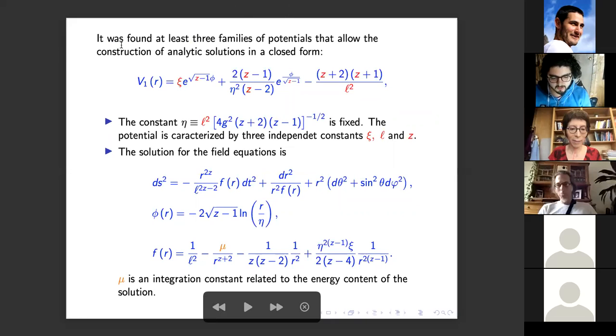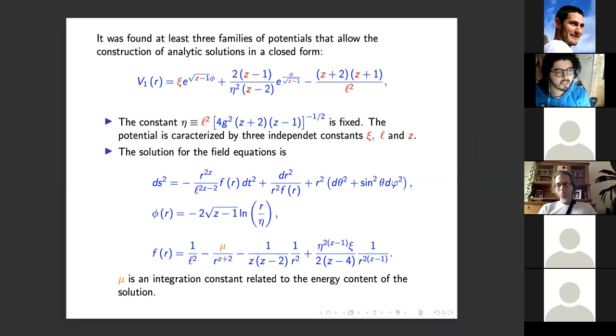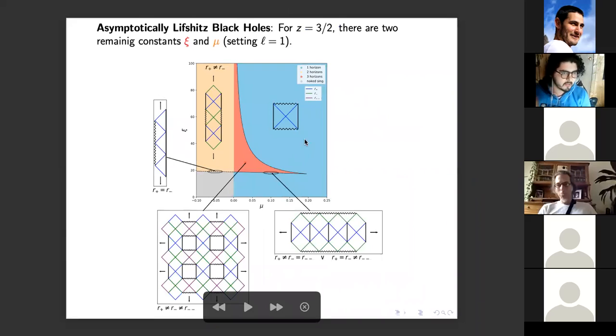Okay, next please. Okay, it was found at least three families of potentials that allow the construction of analytic solutions in closed form. The first one is given in the first equation and is characterized by three independent constants: psi, z, and l. The solution associated to this potential is given in the last three equations, where mu is an integration constant related to the mass or the energy content of the solution. And the metric asymptotically is a topological Lifshitz spacetime—topological because we change the plane by a sphere, yeah.